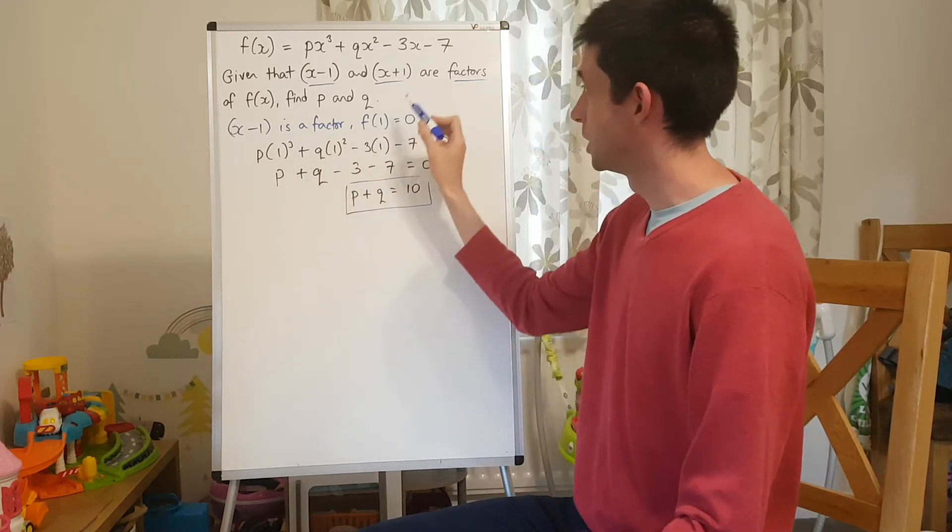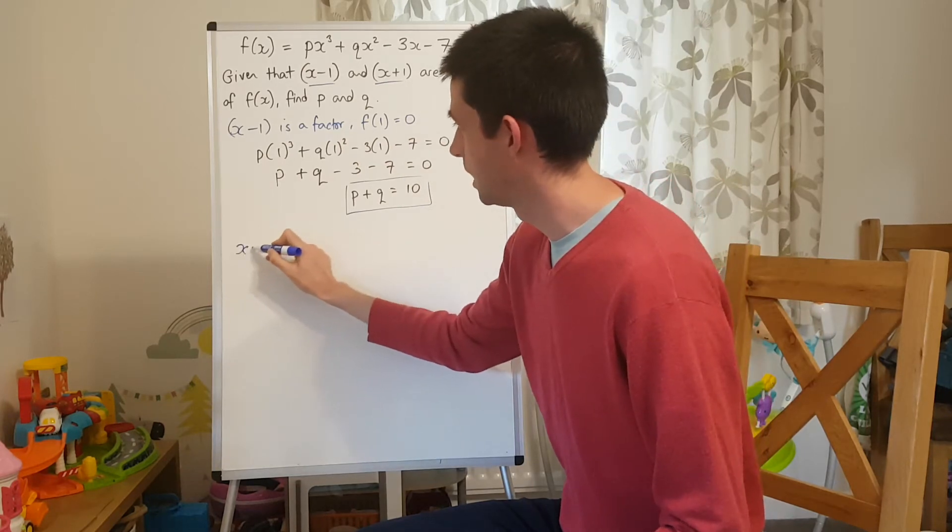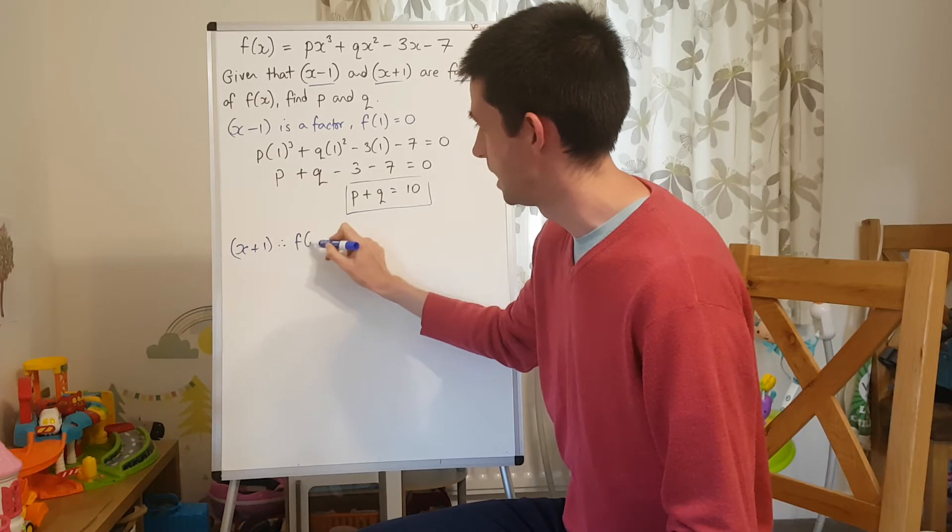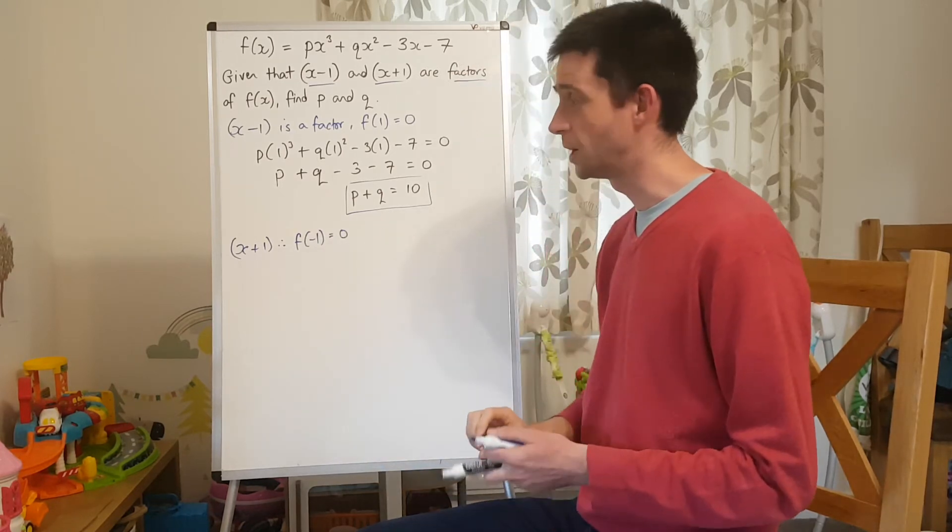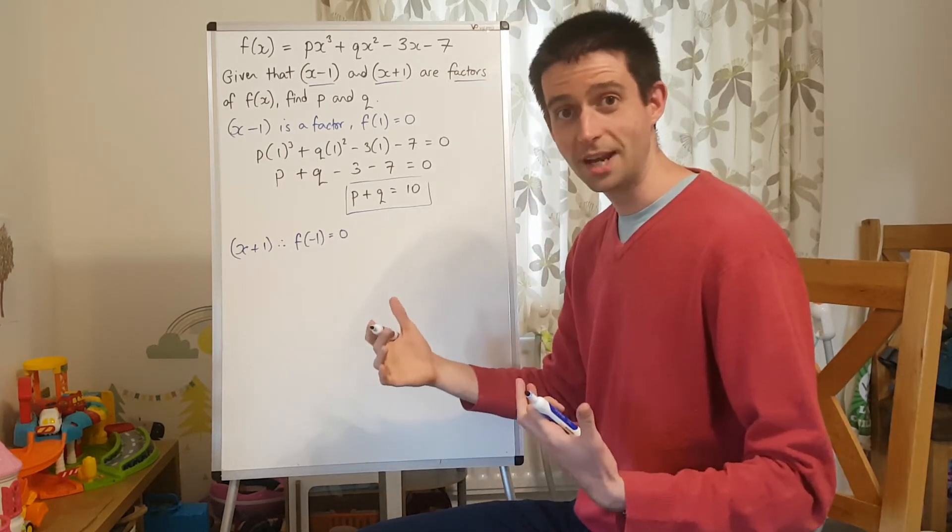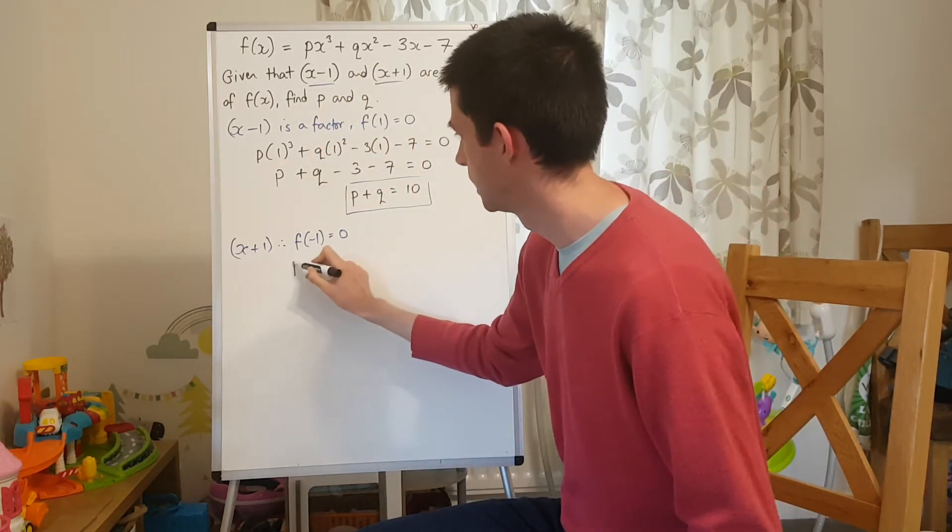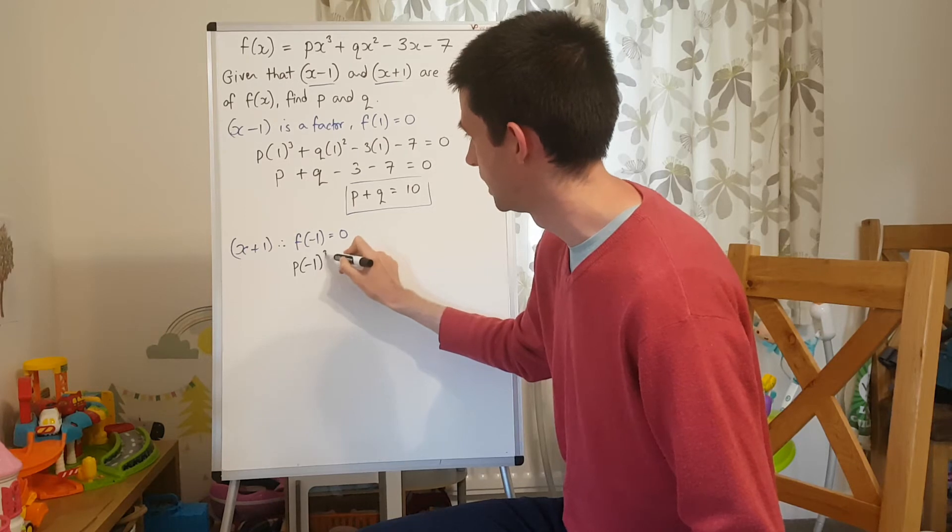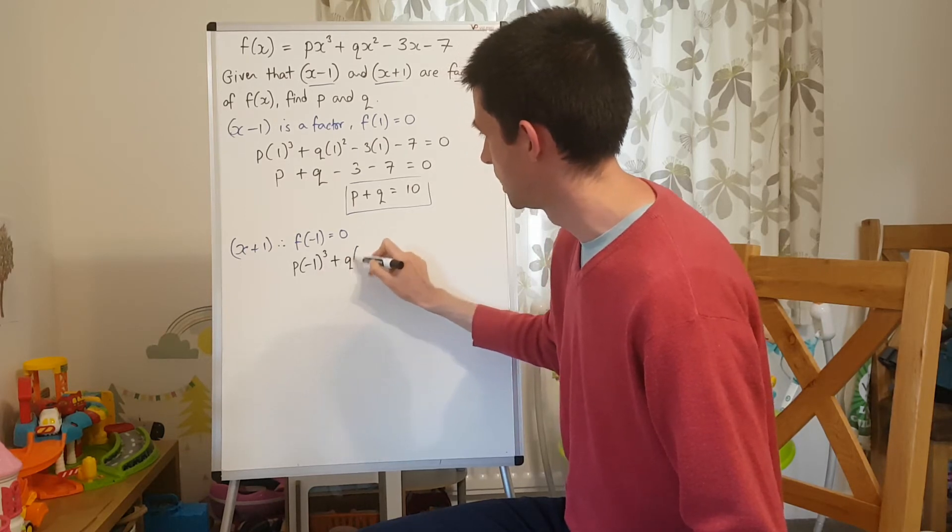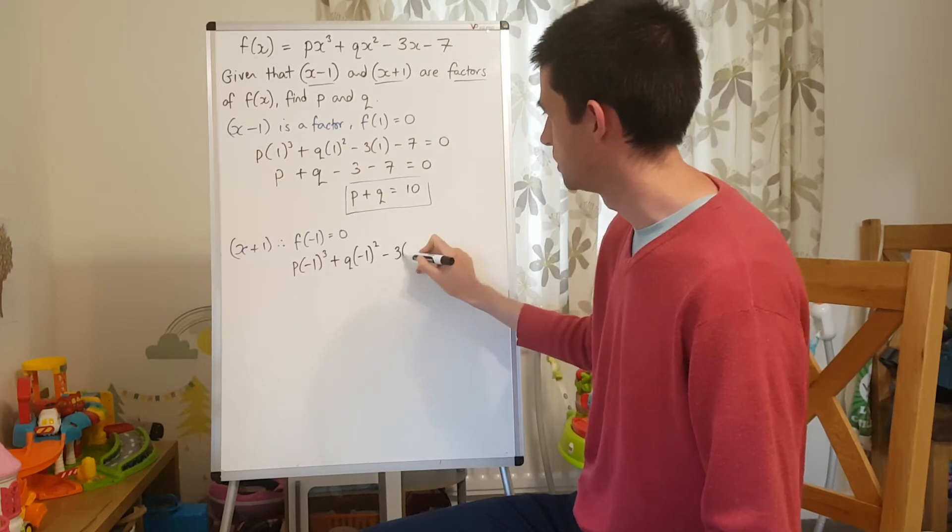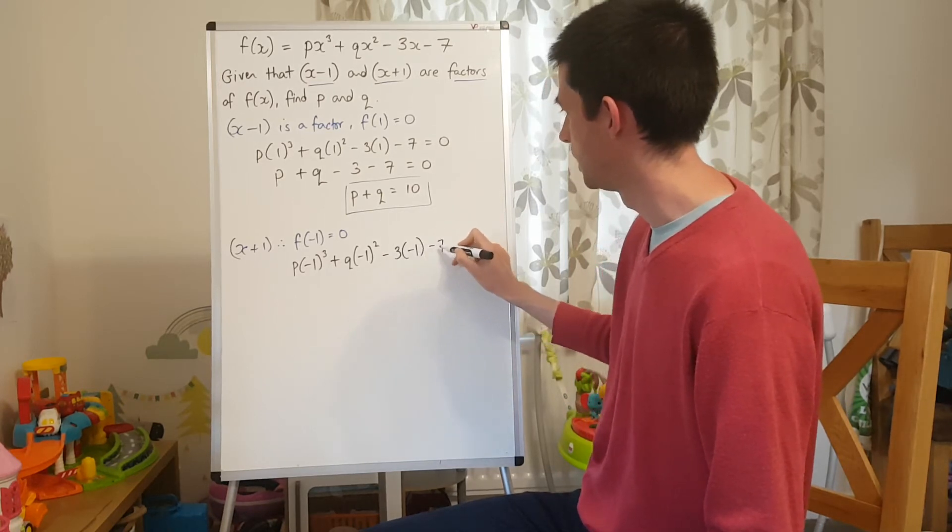The next thing I'm told is that (x + 1) is a factor, and therefore that tells me that f(-1) will equal 0 as well. So, I'm going to substitute -1 into the original function here. So, p(-1)³ + q(-1)² - 3(-1) - 7 = 0.